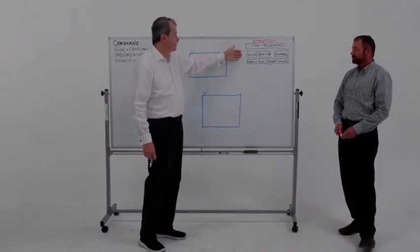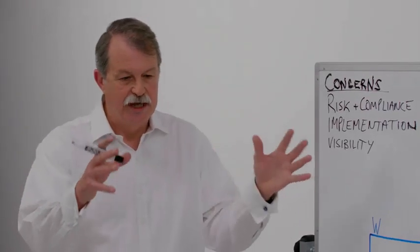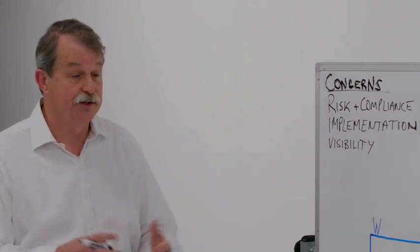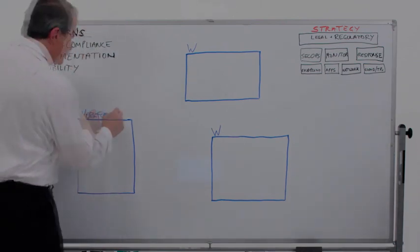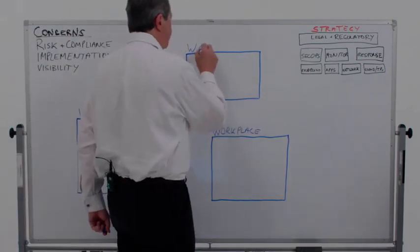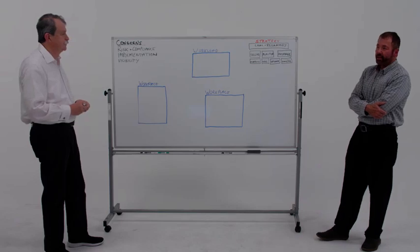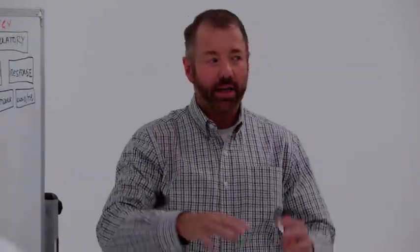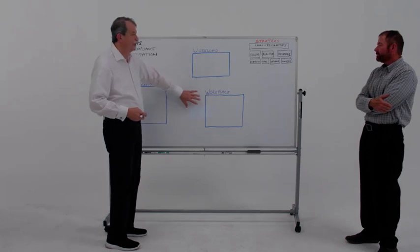We've broken this down into three areas: the high-level area, the operational area, and the technology area. Within those, we've identified three spans of control the CISO might want to look at: the workforce, the workplace, and the workload. We're going to talk about each of these individually to show how they fit together, and identify all the Cisco pieces of this puzzle that map to each area.